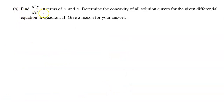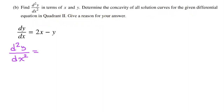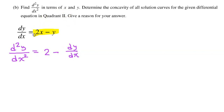Part B: Find the second derivative in terms of x and y. We can find the second derivative by taking the derivative of the first derivative. The derivative of 2x is 2, and the derivative of y is dy/dx. We have an expression for dy/dx, so let's make that substitution.